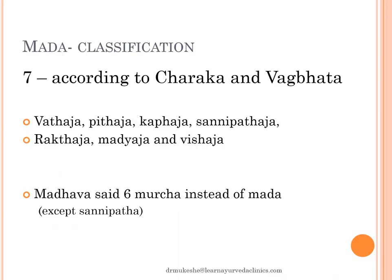First let us look into Mada. The classification according to Charaka and Vagbhata — Mada is of seven types: Vataja, Pittaja, Kaphaja, Sannipataja, Raktaja, Madhyaja and Vishaja. Madhavadana, instead of explaining Mada, uses a similar classification for the stage Murcha and he omitted Sannipataja. This we will discuss later on.